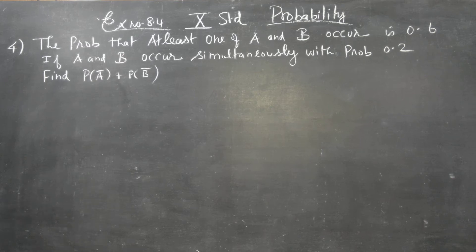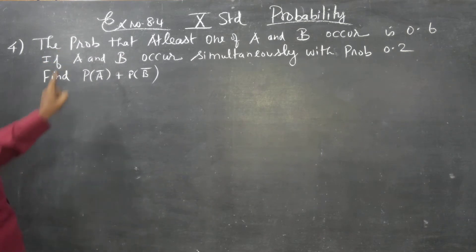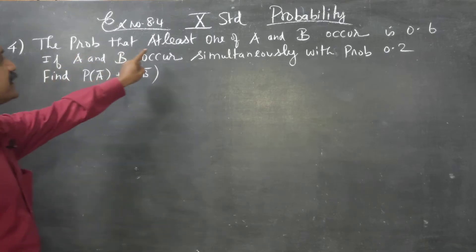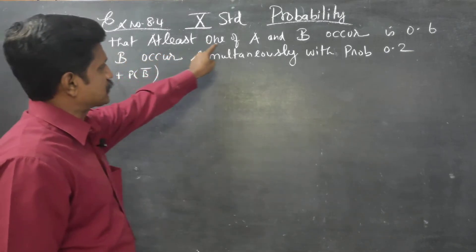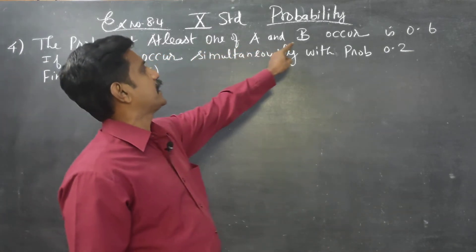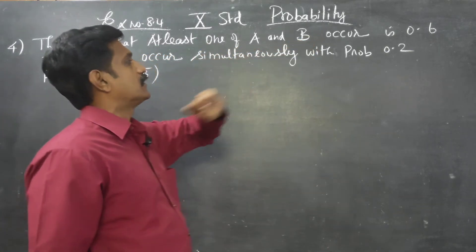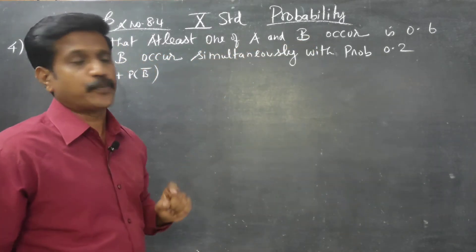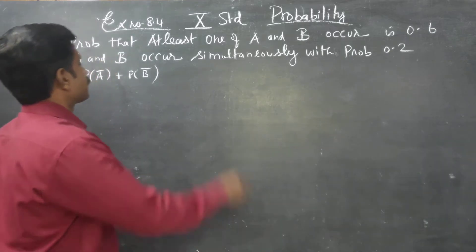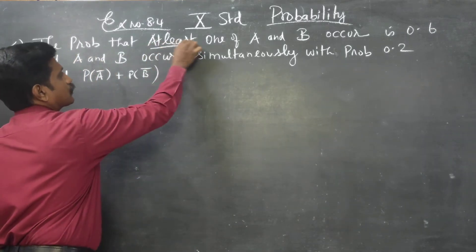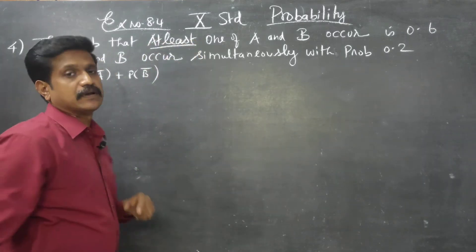Dear 10th standard students, in exercise number 8.4, the probability that at least one of A and B occur is 0.6. There is a clue word here.